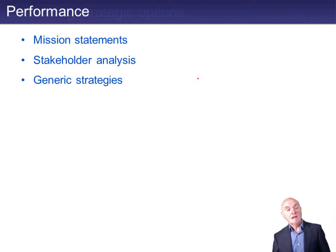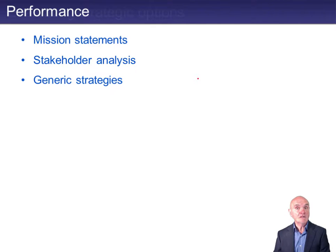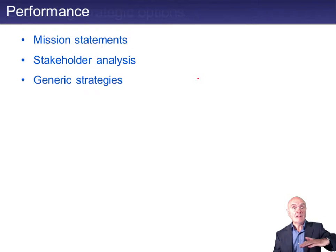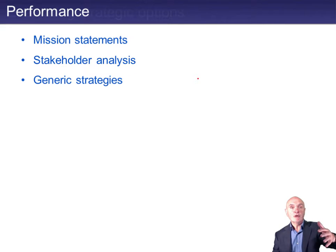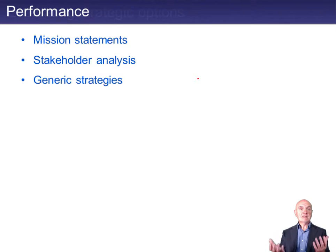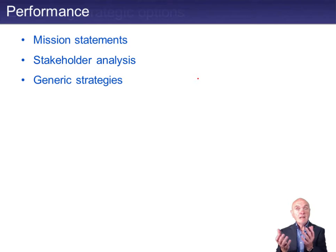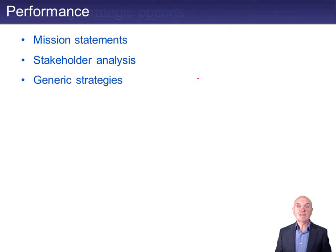Generic strategies: if we say we're a cost leader, then it's important that we measure our costs and make sure that the costs are as low as they can possibly be — ideally lower than anybody else. If a generic strategy is one of differentiation, and we have to launch new products, new styles and so on, if we're saying our products are better because they're styled better, we ought to try and measure that in some way. It may not be easy, but how do we know that the style is better or the products are sufficiently innovative if we don't try to measure it?